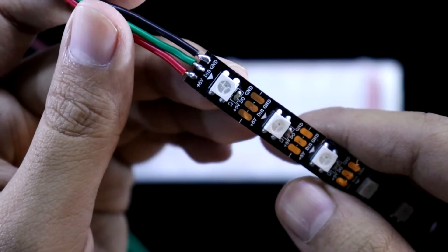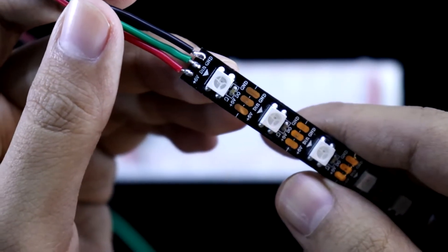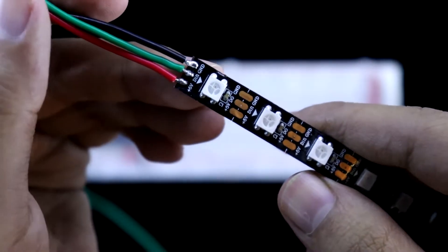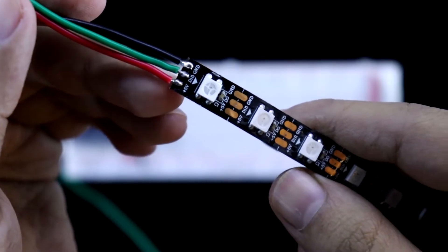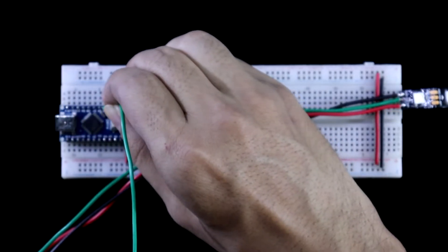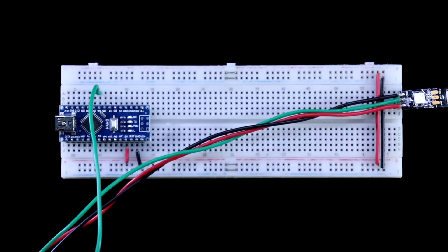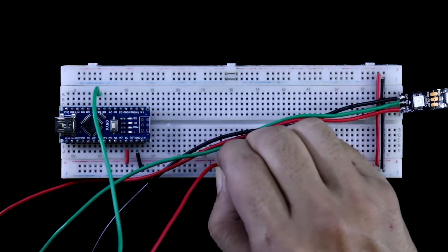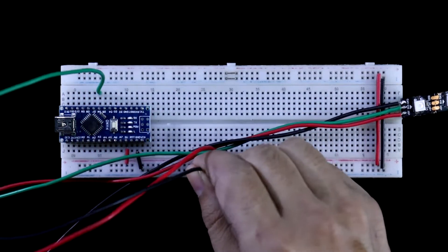I have soldered black wire to the ground, red one to the plus 5 volt, and green wire to the data in. So I am connecting green wire to the D6 pin of Arduino, red one to the positive rail, and black one to the negative rail.